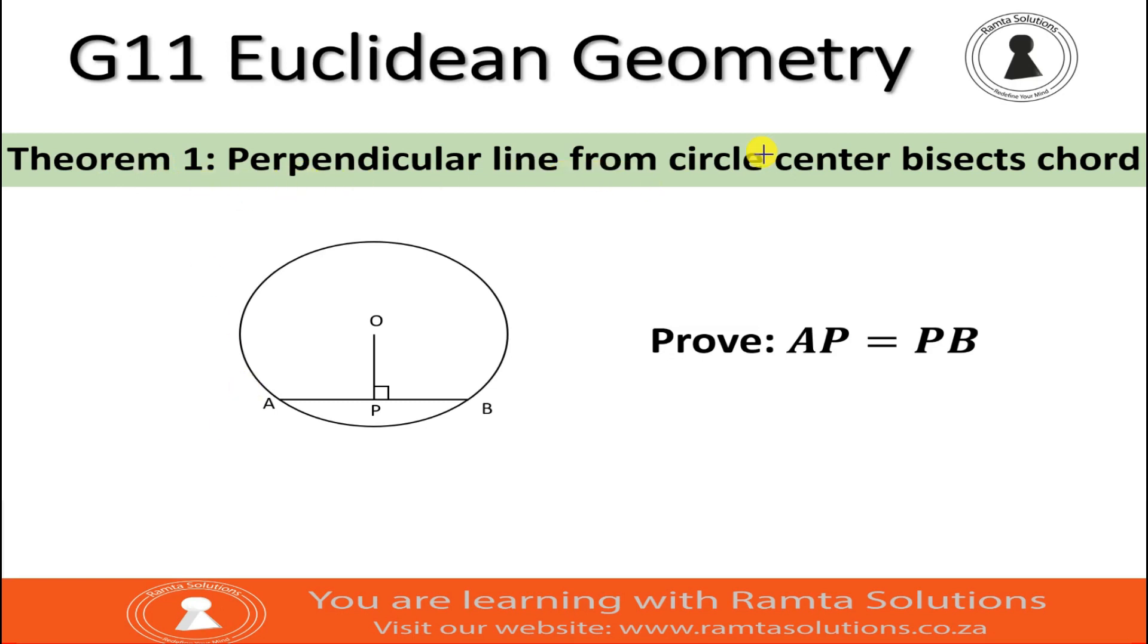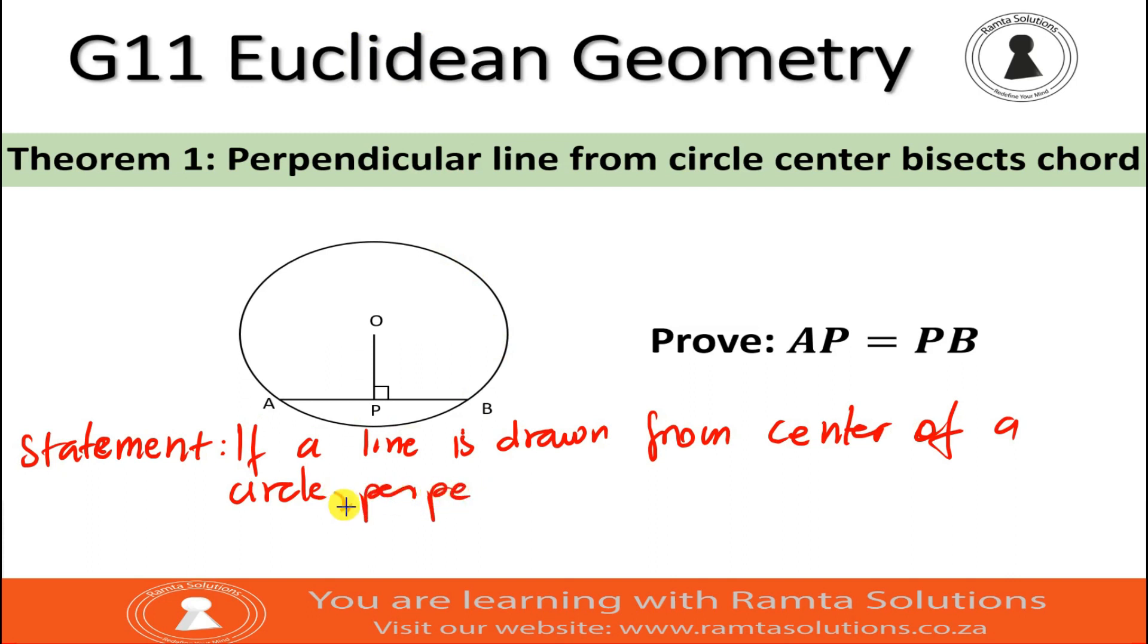Remember, theorem 1 says perpendicular line from center bisects chord. Let me write the statement. The statement of this theorem says if a line is drawn from center of a circle, perpendicular to a chord, then it bisects the chord.